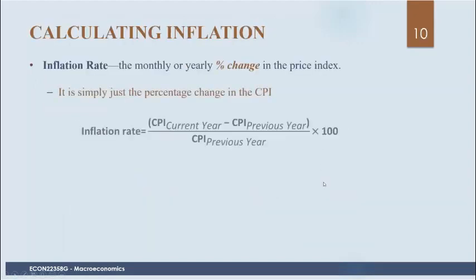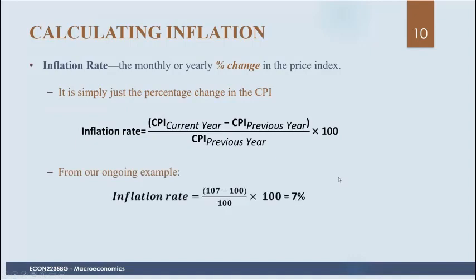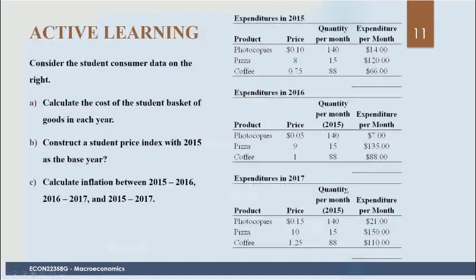Inflation is just the percentage change in the price index. We take the CPI in the current year minus the previous year, divide by the previous year, and multiply by 100. In the example with 107 and 100, the inflation rate is 7%.